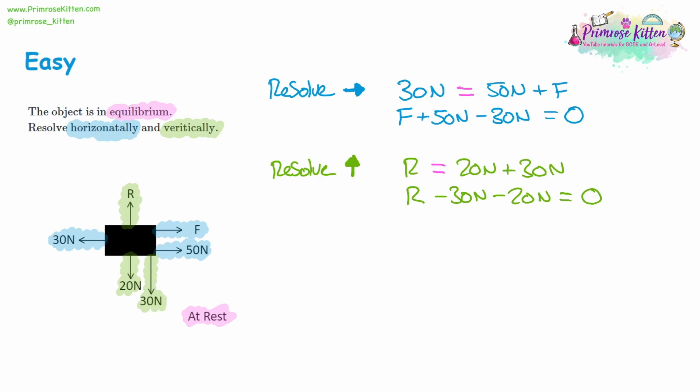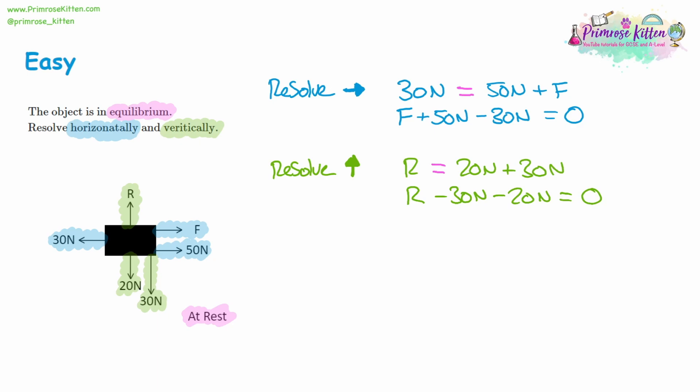As we get to harder questions, we'll be using this with maths happening afterwards. So let's try the same thing for the next question. We resolve horizontally — we've got 70 newtons to the left, P newtons to the right, and 40 newtons to the right. Vertically, we've got 70 newtons upwards, 70 newtons downwards, and W newtons downwards as well. The objects are in equilibrium. This object is travelling downwards at 4 metres per second, but that might make you think the lower forces must be larger — that's not true. The forces only change what's happening to the object.